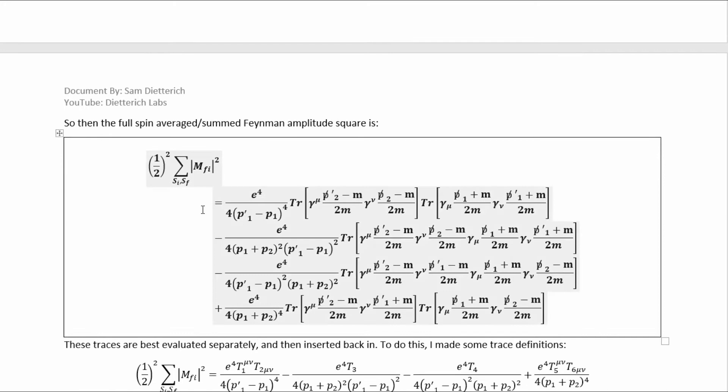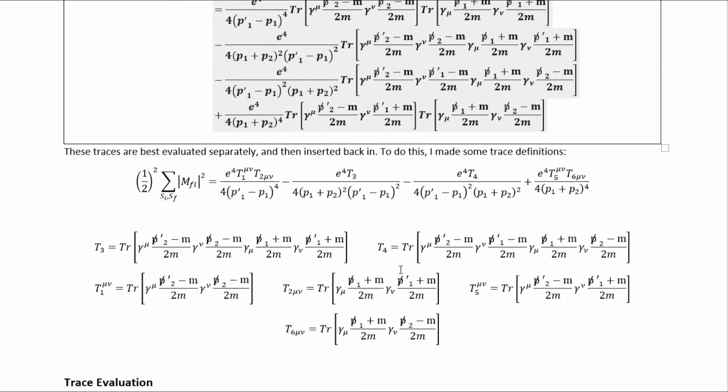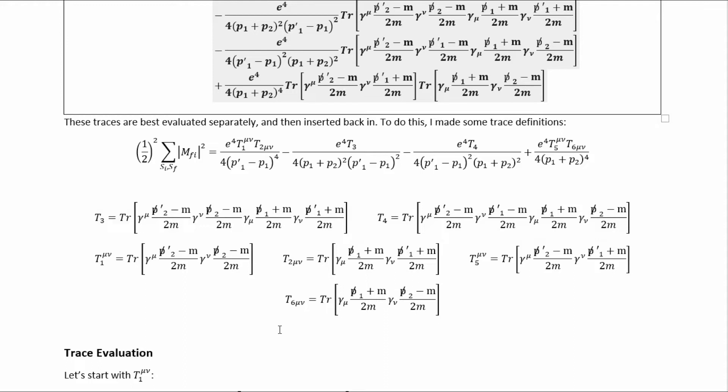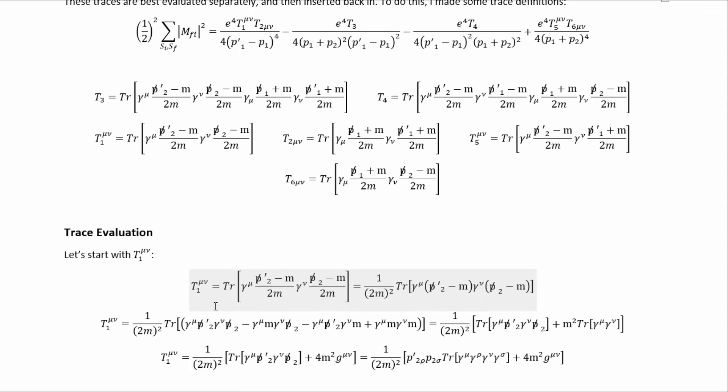We can do the same thing to the first cross term. That gives a result of a slightly different form — we get a single trace factor instead of two contracted trace factors, and it has many more factors in it. Then we handle the other cross term in exactly the same way, and again we get another term of that form. We then plug them all back into the complete squared Feynman amplitude. If we break that down into individual traces so we can evaluate them separately, we get an expression where I've made some definitions to keep track of the different pieces.